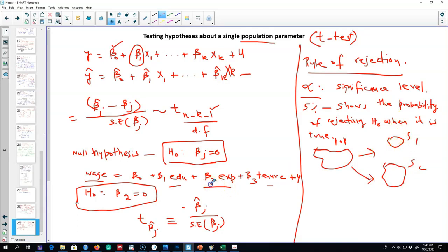For example, we may get the value of beta 2 here, that experience increases wages by 0.03. If we pick another sample, it may show 0.04. We are making a hypothesis about what is happening in the population, that is, whether in the population beta 2 is actually 0.